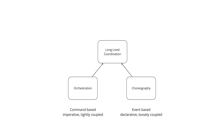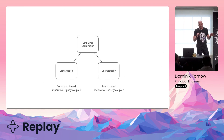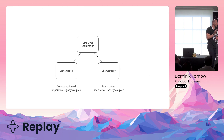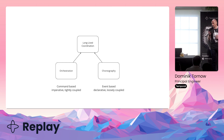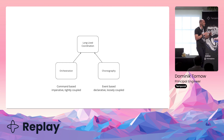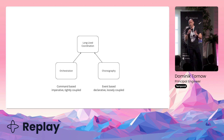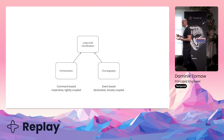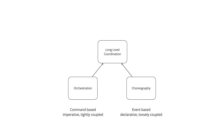In summary: we need long-lived coordination. We can implement it either via orchestration or via choreography. Orchestration is command-based, imperative, and what we think of as tightly coupled. Choreography we think is event-based, declarative, and for whatever reason we think it is loosely coupled. But I want to challenge that notion. Just because something is command-based does not mean it is tightly coupled, and just because something is event-based does not mean it is loosely coupled.